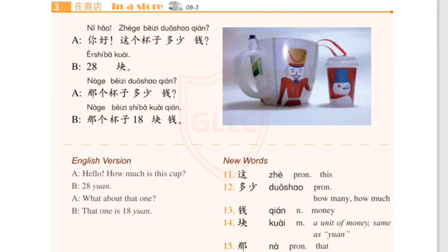New words: 下午，商店，买，个，杯子。课文三（Text 3）：你好，这个杯子多少钱？二十八块。那个杯子多少钱？那个杯子十八块钱。